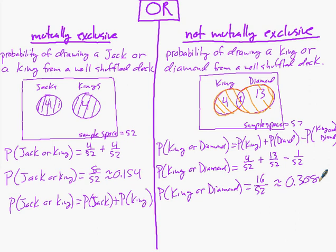So almost a 31% chance of getting either a king or a diamond. Diamonds make up 25% of the pack — one of four suits — and then you add in the kings that aren't diamonds, which bumps it up to almost 31%. That's the OR. The next thing to talk about is conditional probability, which is a long example, so I'll make that the next video.